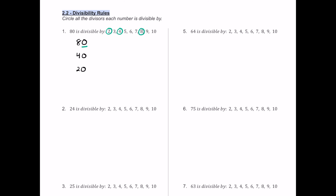Next, look at the sum of the digits. 8 plus 0 equals 8. If that sum is a multiple of 3, it's divisible by 3 — but 8 is not a multiple of 3, so we rule out 3. And 8 is not a multiple of 9, so that's out too. To check divisibility by 5, the last digit must be 0 or 5 — this ends in 0, so 5 works. For 10, the last digit must be 0, so 10 works.